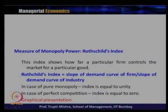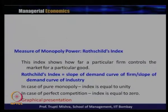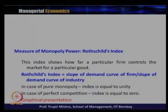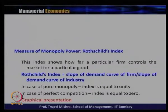The Rothschild index shows how far a particular firm controls the market. It is defined as the slope of the demand curve of the firm (perceived demand curve) divided by the slope of the demand curve of the industry (proportional demand curve). The value of the index in case of pure monopoly is equal to 1, and in case of perfect competition it is equal to 0. Values between 0 and 1 indicate other market structures.